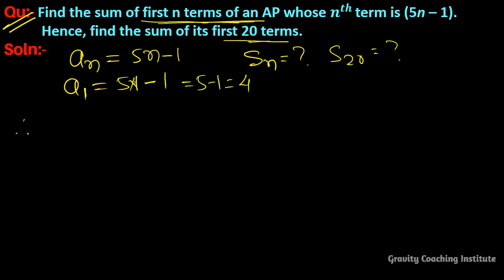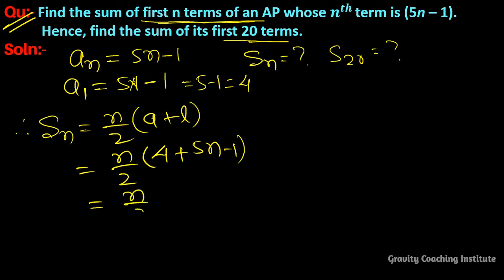Therefore, Sn equals the formula n upon 2 times (a plus l), where l is the last term. This equals n upon 2 times (5n plus 3). So this is Sn, the answer.